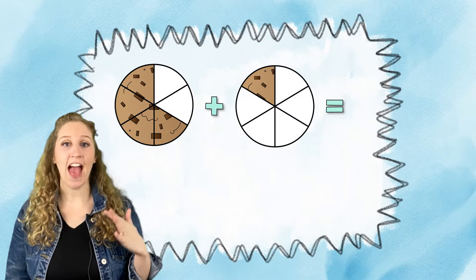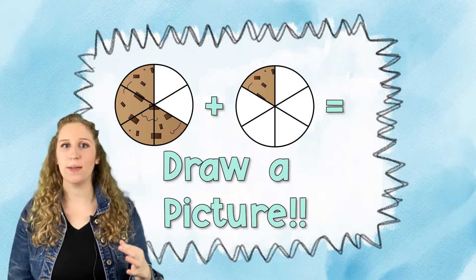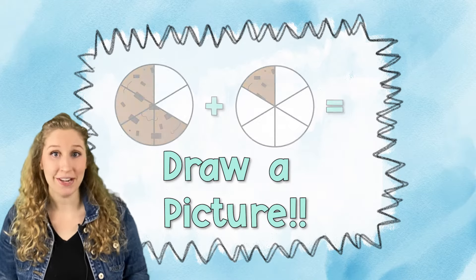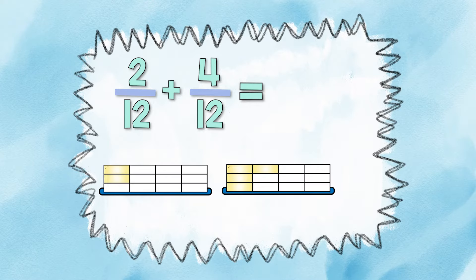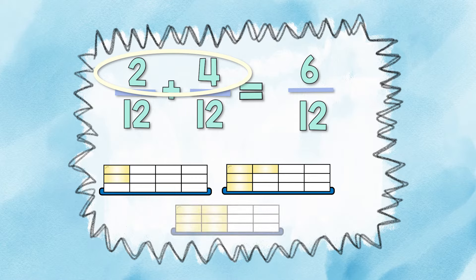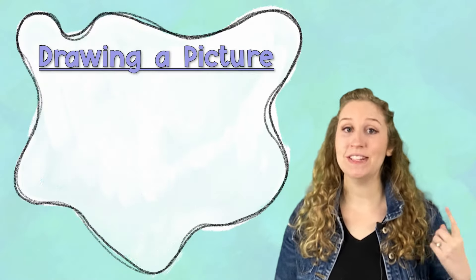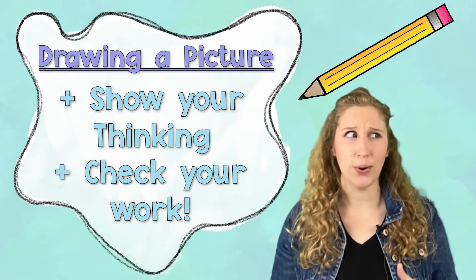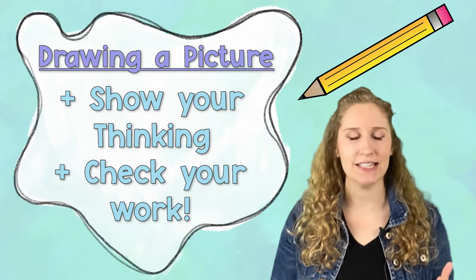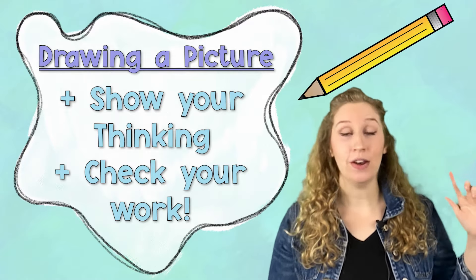My favorite way to solve adding fractions with like denominators is to draw a picture. So let's draw a picture of this problem right here: 2/12 plus 4/12. Drawing a picture not only is a great way to show your thinking, but it's also a great way to check your work. So in case you accidentally add something incorrectly, you can go back, recount, and recheck what you're thinking.